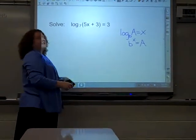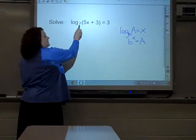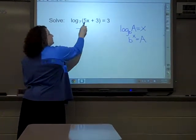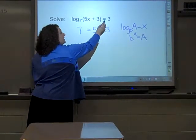So if I apply that property to this equation, the base is 7. The exponent of 7 to get 5x plus 3 is 3.